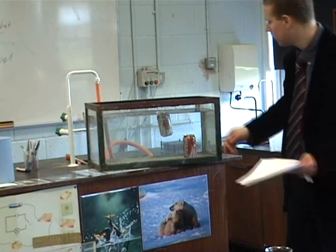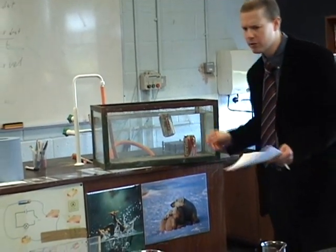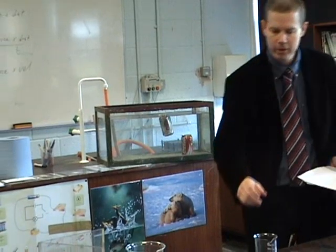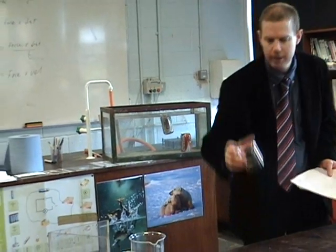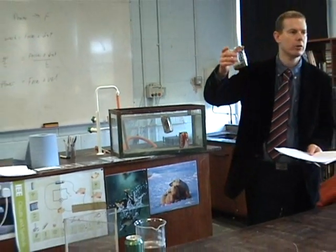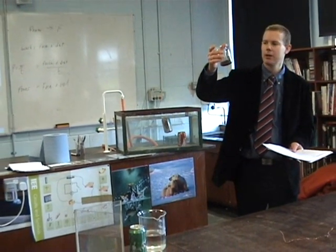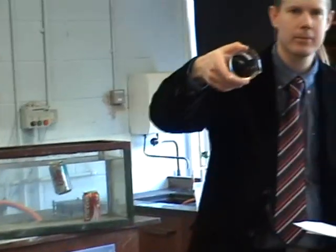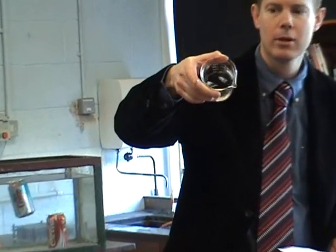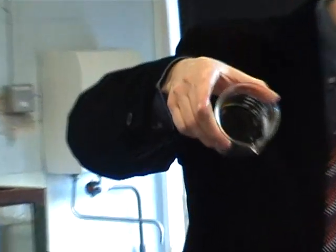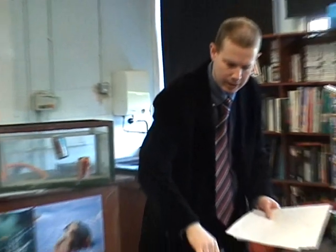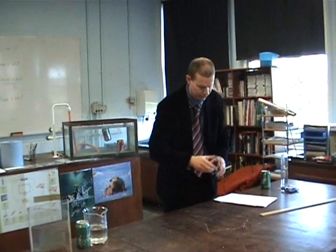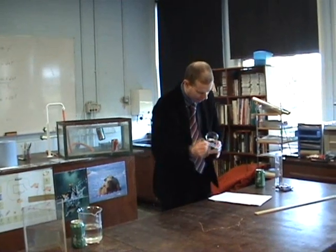If you want to see how much sugar is in a regular can of Coke, all you've got to do is put it in a beaker and evaporate all the liquid off of it, and what you're left with is something like this. Pretty nasty stuff — in fact, it's pretty much solid.